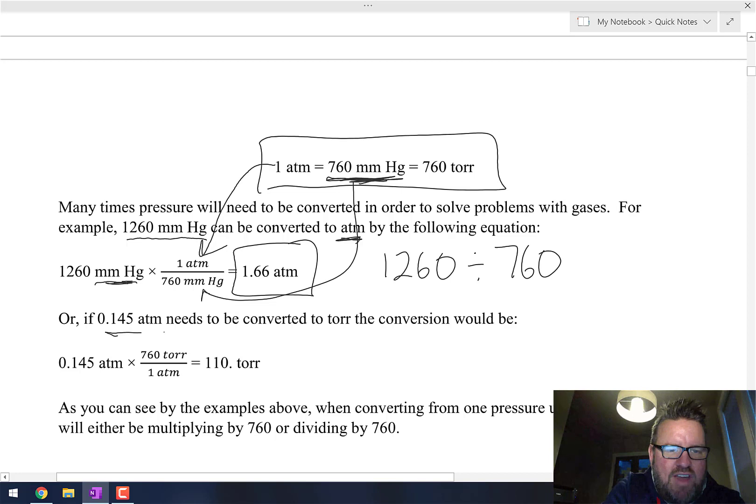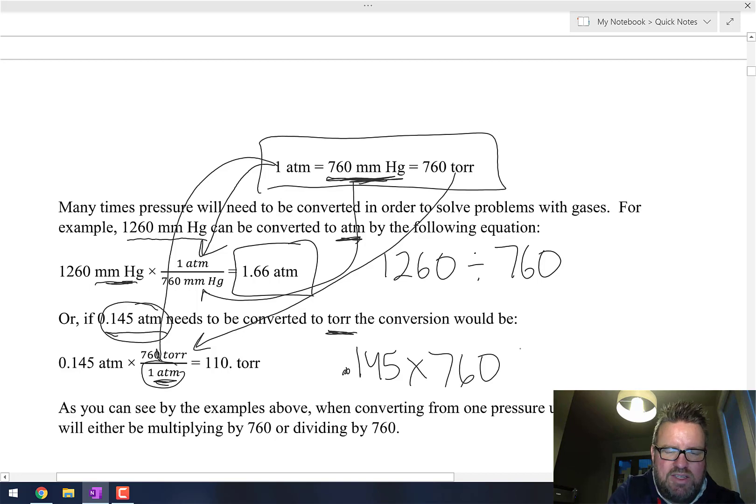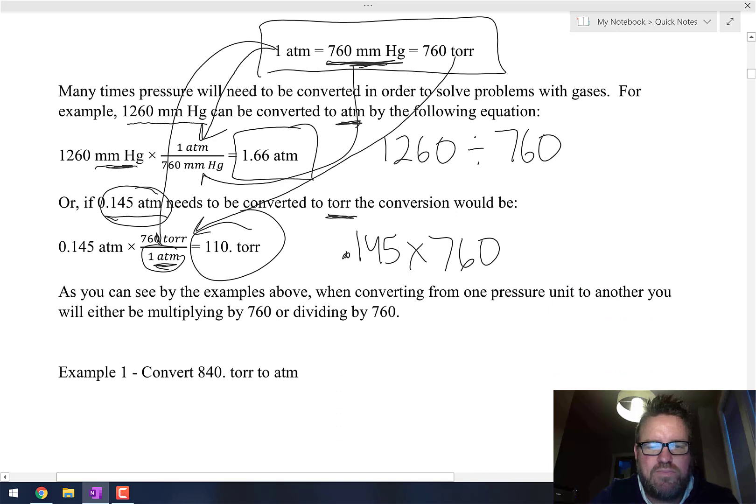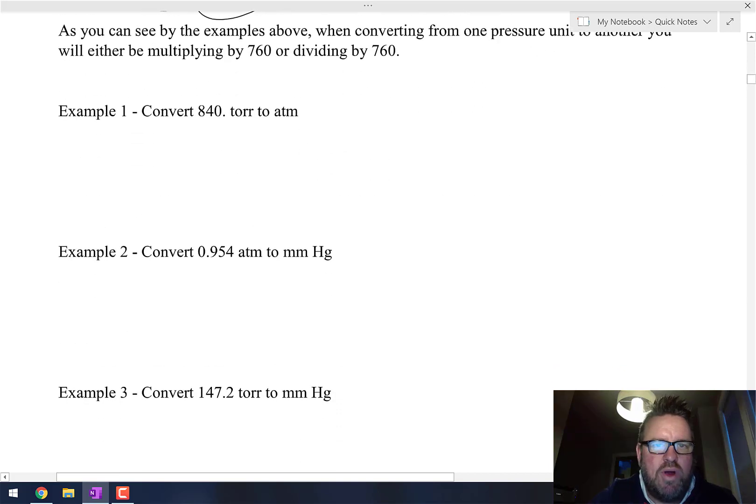In another example, 0.145 atmospheres—we want to convert that to torr. Notice we start with the number that's given: 0.145 atmospheres. I put my one atmosphere on the bottom, and then it wants to be converted to torr so I put torr on the top. Then I take 0.145, I multiply by 760, and I get 110 torr.